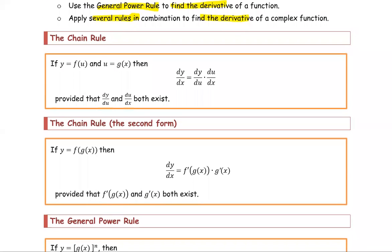The chain rule is the rule that we use to find the derivative of a function in the composite function form. As we identify y in terms of u, and u in terms of x, the derivative of y in terms of x is the product of the derivative of y with respect to u and the derivative of u with respect to x.